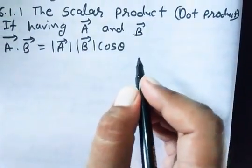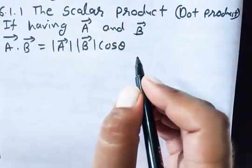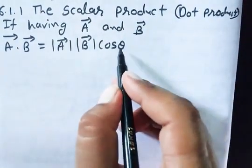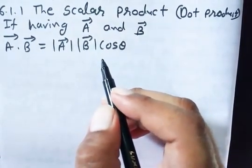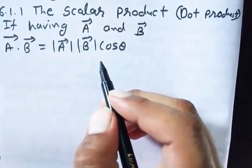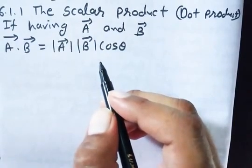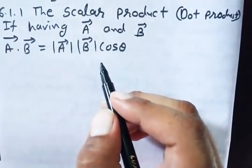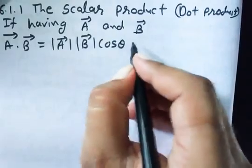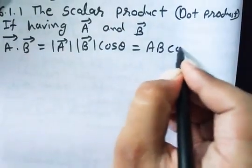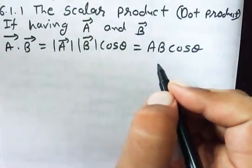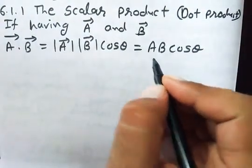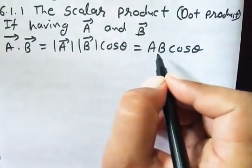Now the question arises: what is theta? Theta is the angle between A and B vectors, because vectors have directions and there will be a particular fixed angle between their directions. So I can also write AB cos theta - A is scalar, B is scalar, so our answer will also be scalar.